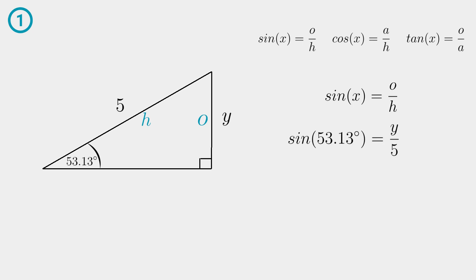Plug in your values into this equation. Multiply both sides by five to isolate the Y. Then type five times sine of fifty three point thirteen into your calculator and then you have your answer. Y is rounded off to four units. If they don't give you units such as centimeters it's better to write units next to your answer.